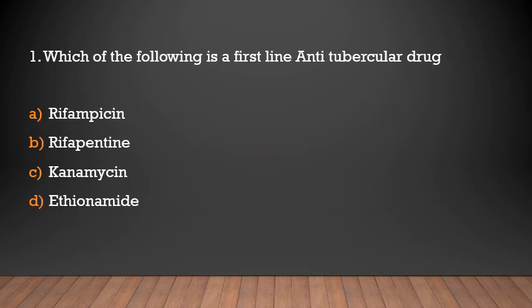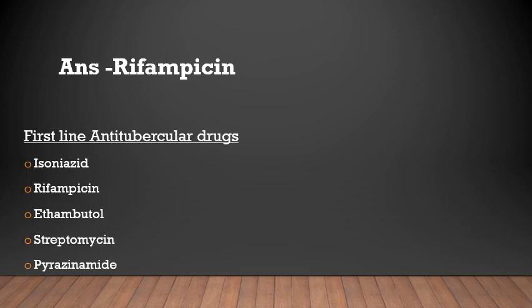Which of the following is a first-line anti-tubercular drug? Rifamycin, Rifapentine, Kanamycin, or Ethionamide? Answer: Rifamycin. The first-line anti-tubercular drugs are Isoniazid, Rifamycin, Ethambutol, Streptomycin, and Pyrazinamide.